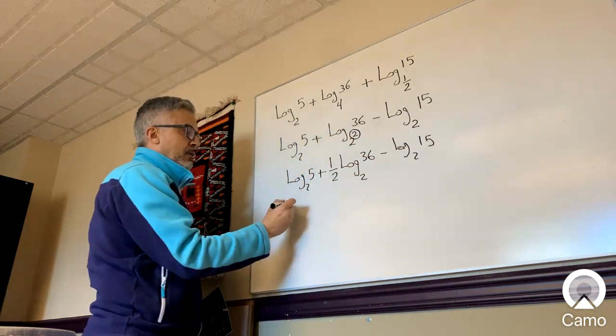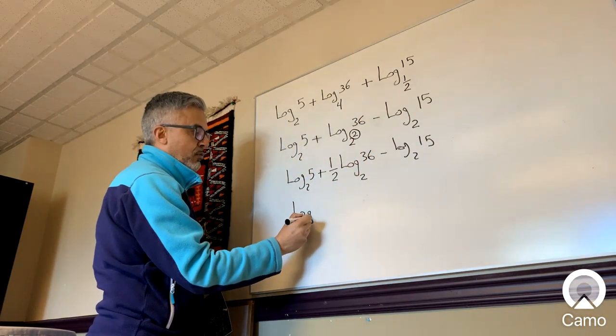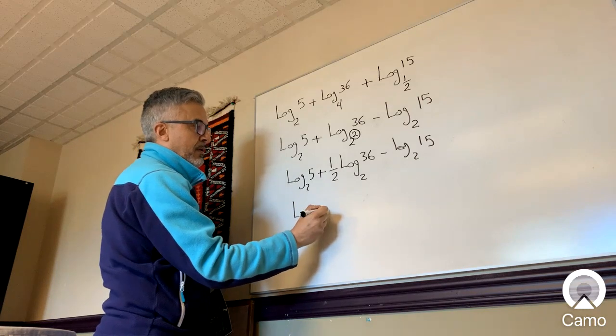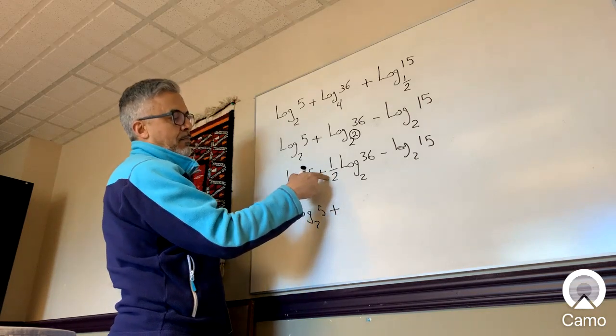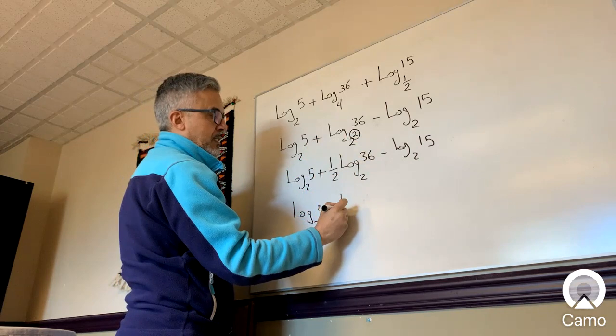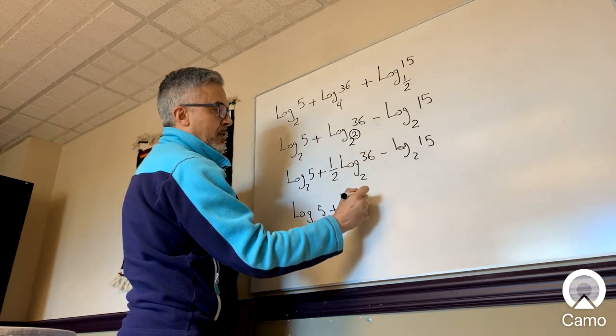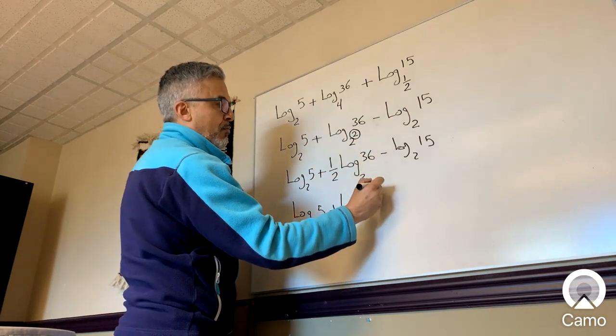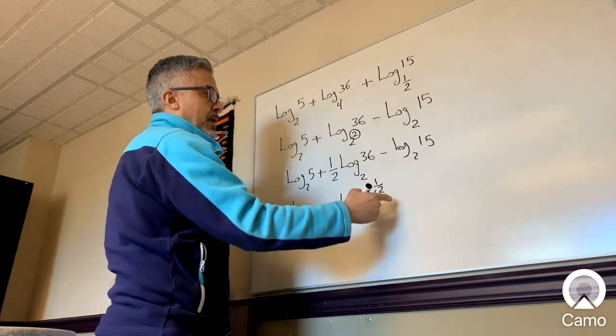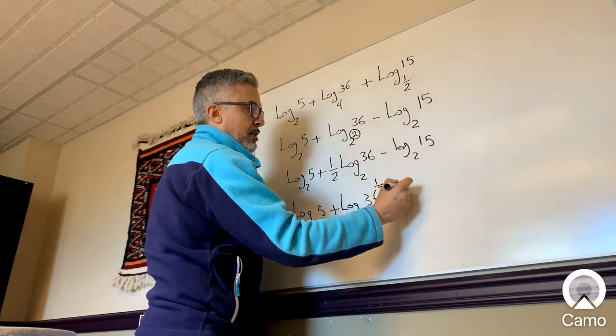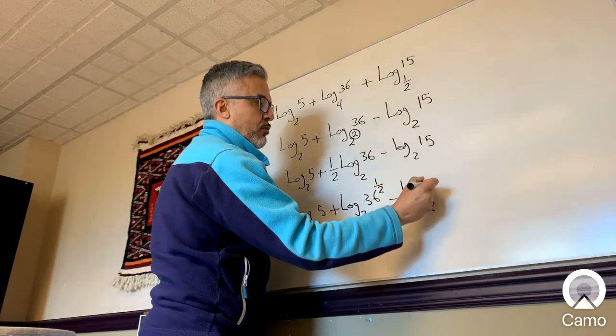Now the next thing I'm going to do, this is going to be log base 2 of 5 plus, I'm going to bring the exponent down to the 36 log base 2 of 1/2, 36 to the power of 1/2 and minus log base 2 of 15.